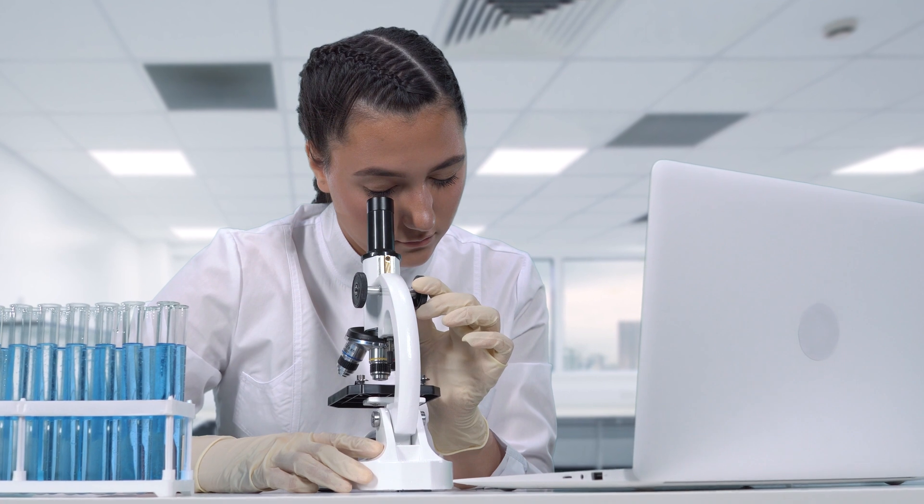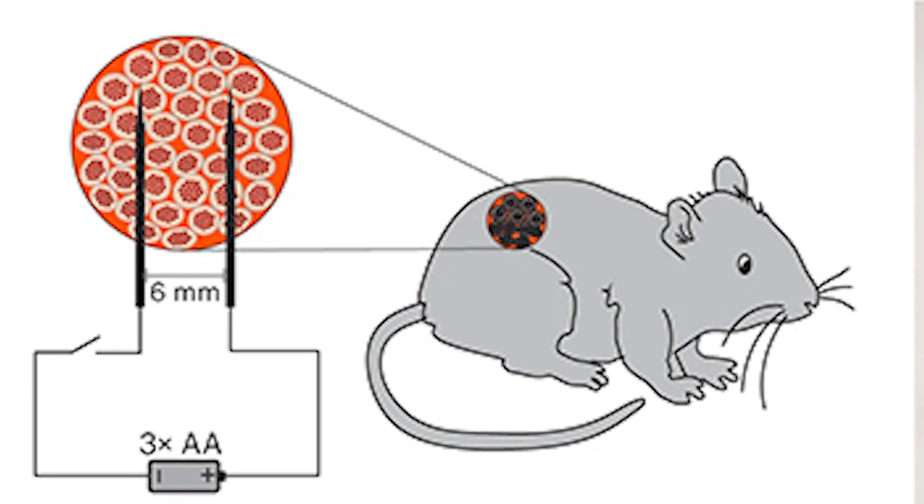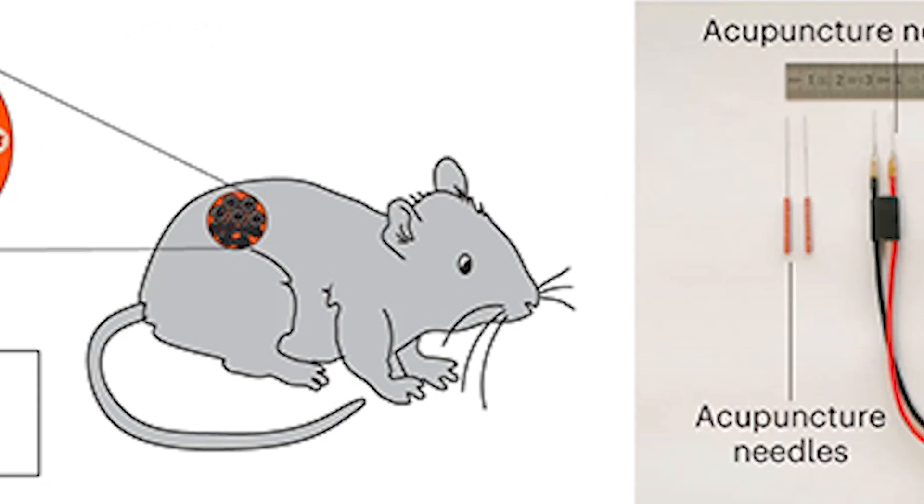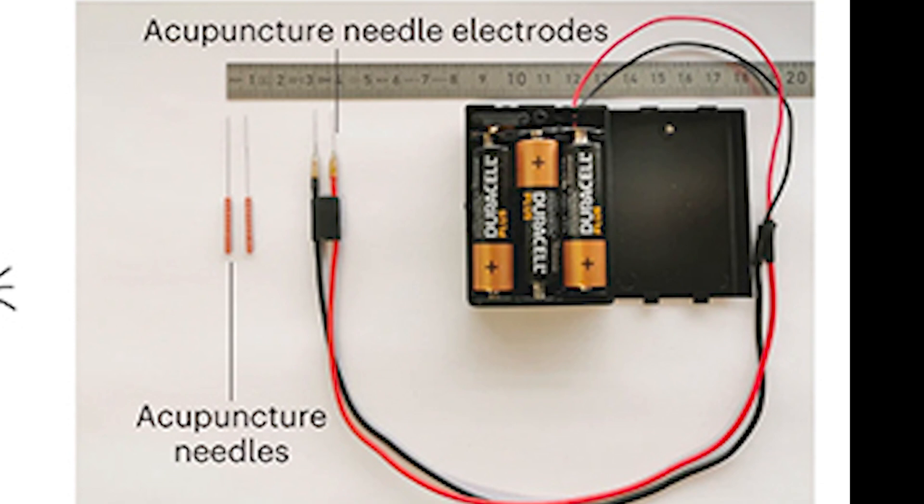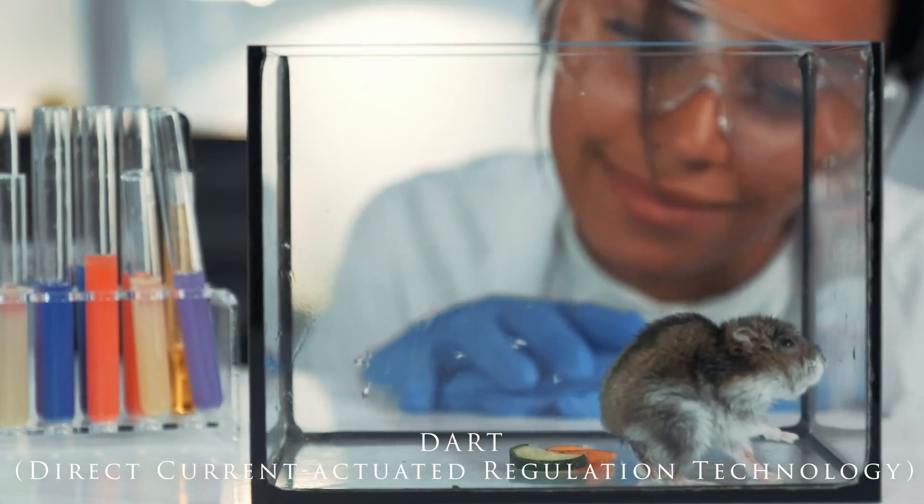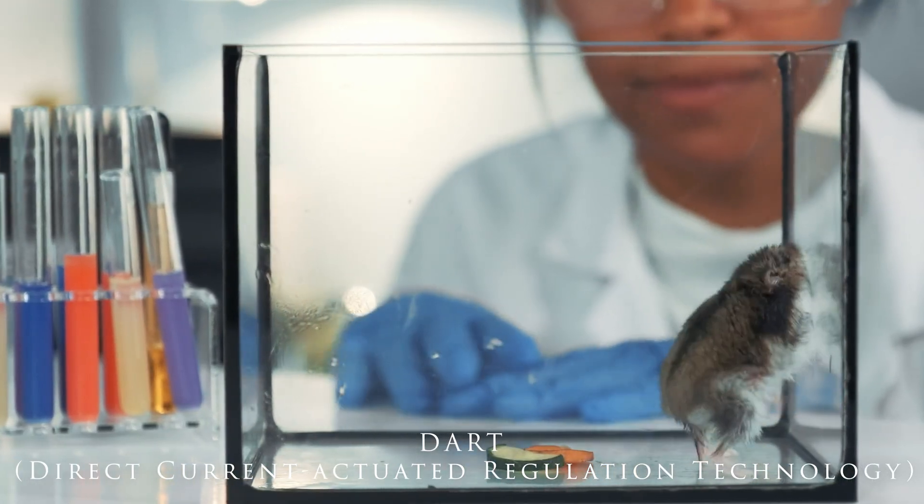In their lab trials, Swiss scientists used this technique to encourage insulin production. Here's how it worked. They implanted specially designed human pancreatic tissues into mice with type 1 diabetes. They then used acupuncture needles to supply a direct current, stimulating these tissues. This method, named DART, was able to bring the mice's blood sugar levels back into a normal range.